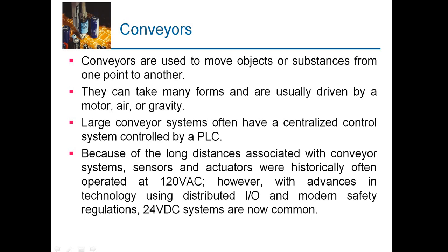Large conveyor systems often have a centralized control system called PLC — Programmable Logic Control. Because of the long distances associated with conveyor systems, sensors and actuators were historically operated at 120 volt DC. However, with advancing technology using distributed I/O and modern safety standards, 24 volt DC systems are now used, so there is no shock or hazard. These are controlled by the programmable logic controller. A human machine interface is also present, and there will be an emergency stop to halt the conveyor.